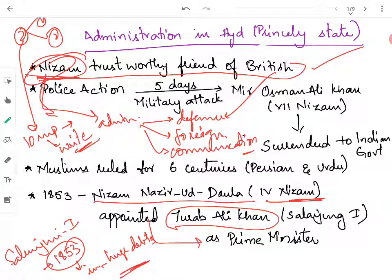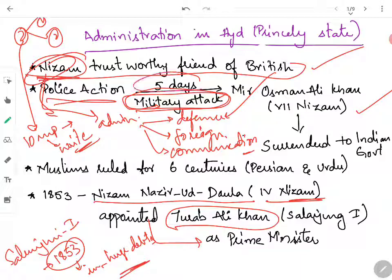For the merger of Hyderabad state into India, the Indian government made a military attack on the Hyderabad state, known as Police Action. Within five days of the military attack, Mir Usman Ali Khan, the 7th Nizam of Hyderabad state, gave up and finally surrendered to the Indian government.